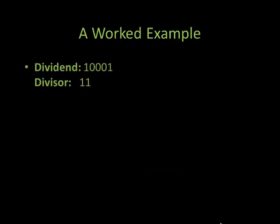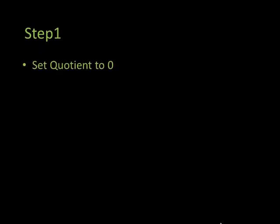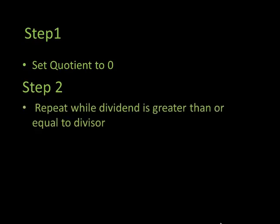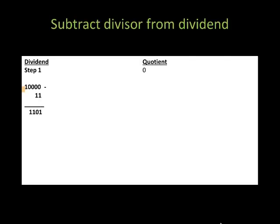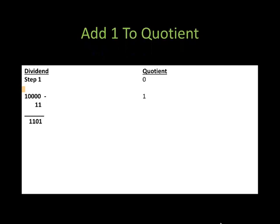A worked example: here we have a dividend of 1001 and our divisor of 11. Step one: set the quotient to zero. Step two: repeat while the dividend is greater than or equal to the divisor. The two operations are to subtract the divisor from the dividend, as shown in the illustration below, and then add one to the quotient.